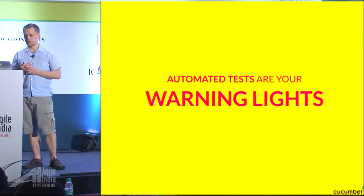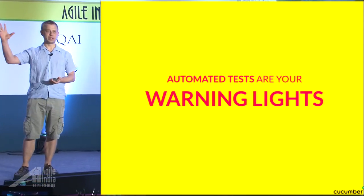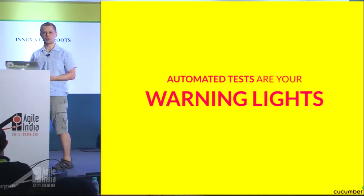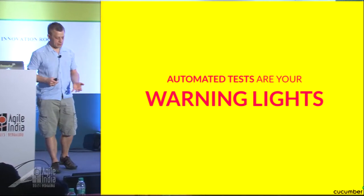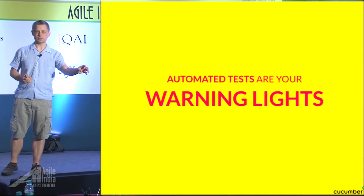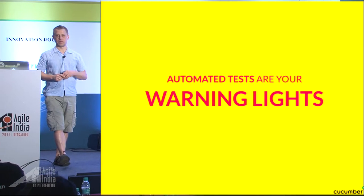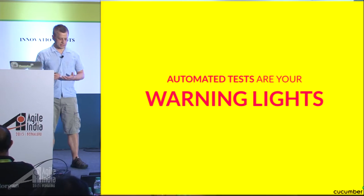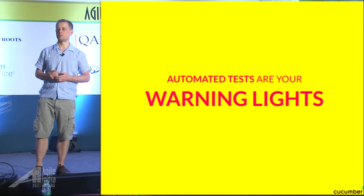When something goes wrong, these warning lights go off. Sometimes they all go off and it can be really annoying. But if you do this well — and TDD helps with that — they will tell you exactly where the problem is so you can fix it. If you try to write all the tests afterwards, typically they don't tell you where the problem is; they just tell you that there is a problem.